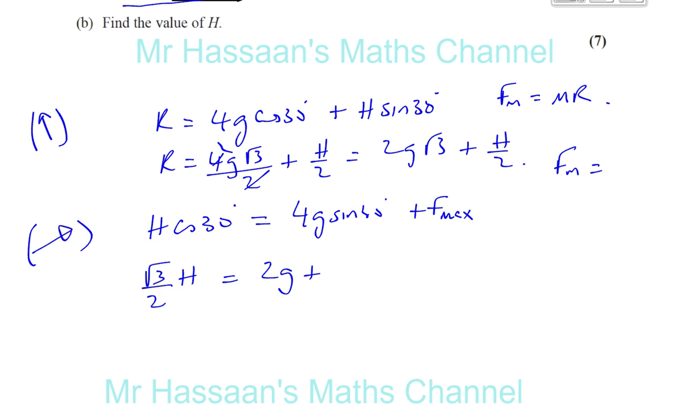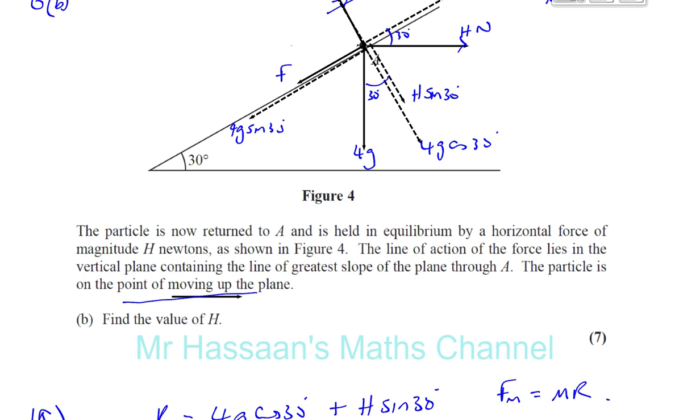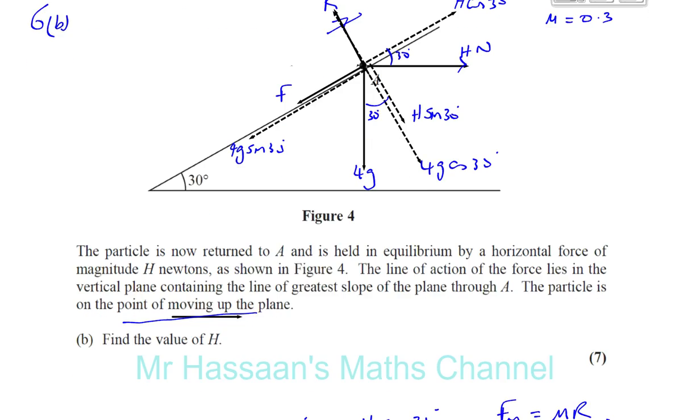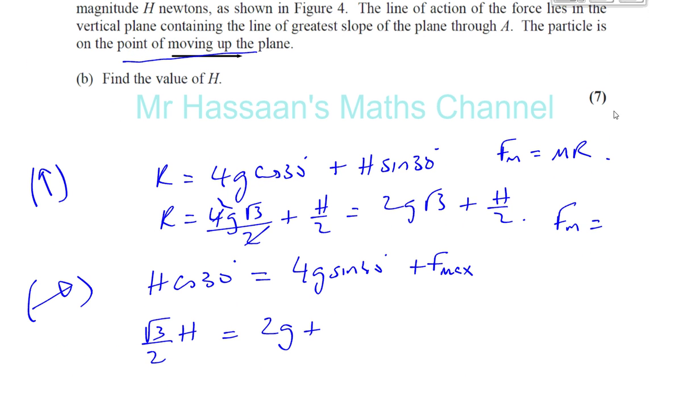And mu was 0.3. So mu is 0.3. So this is going to be F max is going to be 0.3 times this. So you're going to have that 0.3 is like 3 over 10. So you have, let me find some space to write this down.